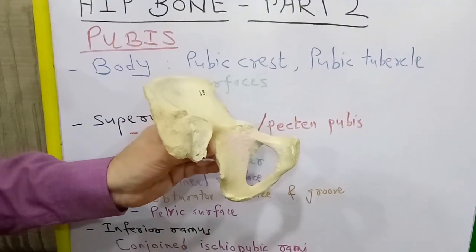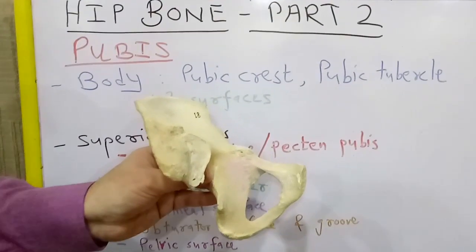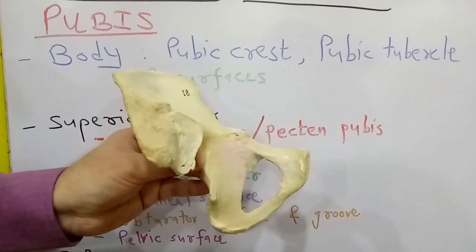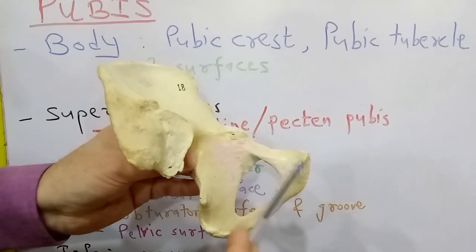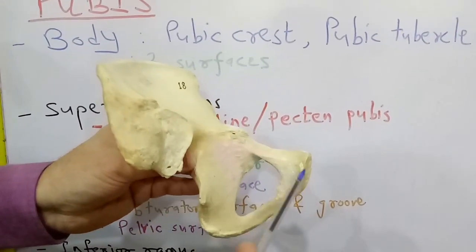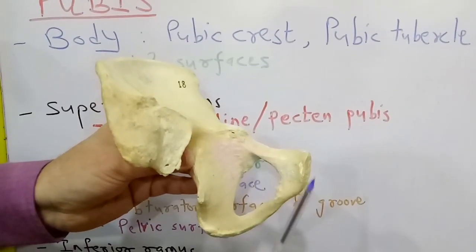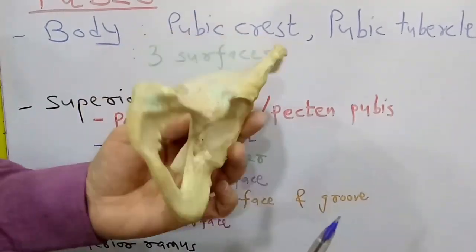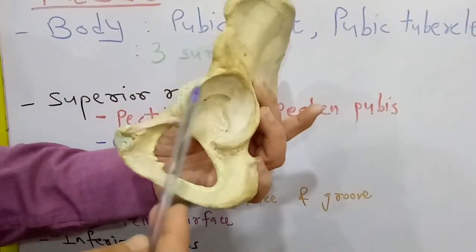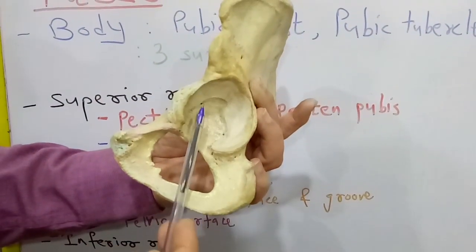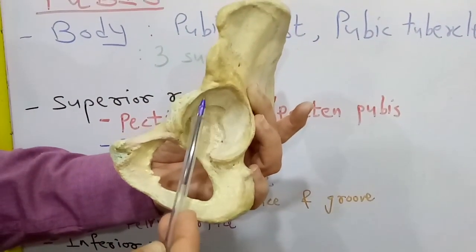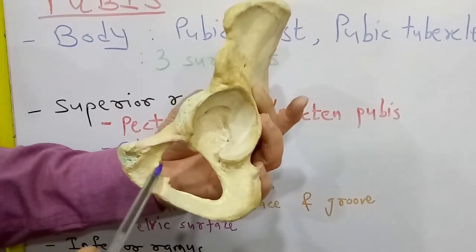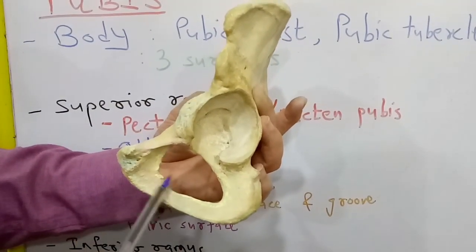This is the left hip bone in anatomical position. The pubis forms the anteroinferior part of the hip bone. It forms the anterior one-fifth of acetabulum and the anterior boundary of obturator foramen.